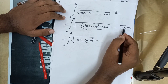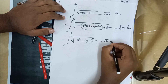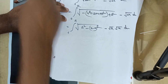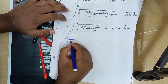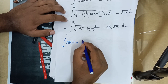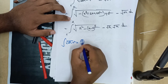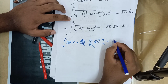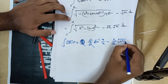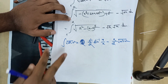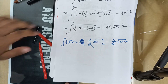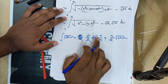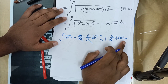For the integration of root over a squared minus x squared, the formula gives: a squared by 2 times sin inverse of x divided by a, plus x by 2 times root over a squared minus x squared. Remember this formula.